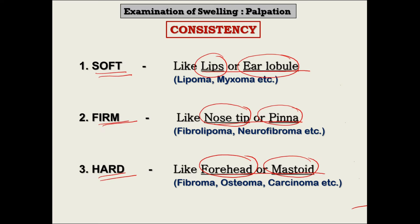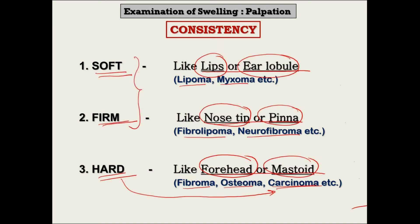Common clinical examples: lipoma and myxoma are soft tumors; fibrolipoma and neurofibroma are firm; fibroma, osteoma, and malignant tumors such as carcinoma are hard. Hard consistency goes more in favor of a malignant tumor because benign tumors and cystic swellings are usually soft or firm. If there is hardness, think of malignancy — but again, it is not a strict rule as exceptions are always there.